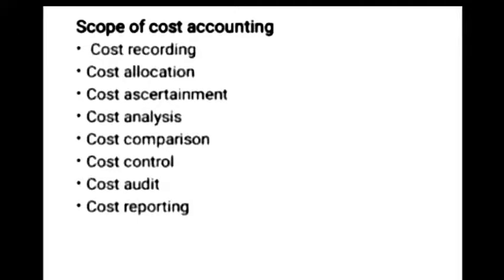Regarding the scope of cost accounting: first is cost recording, which means recording the cost in various books. Next is cost allocation, which means distribution of cost to various departments. Then cost ascertainment means ascertaining the cost of a product.